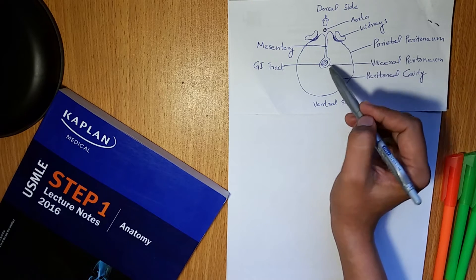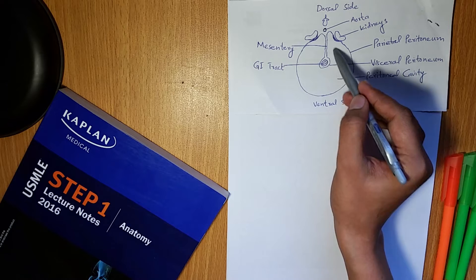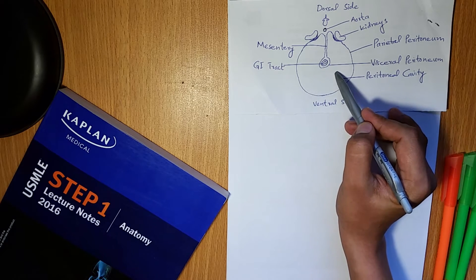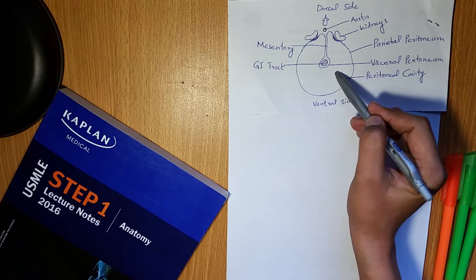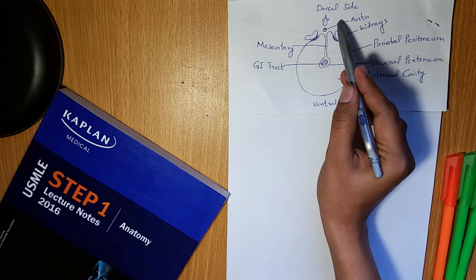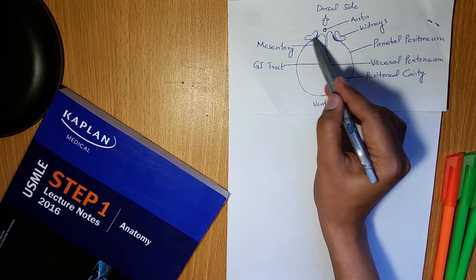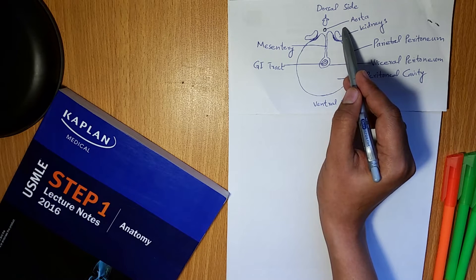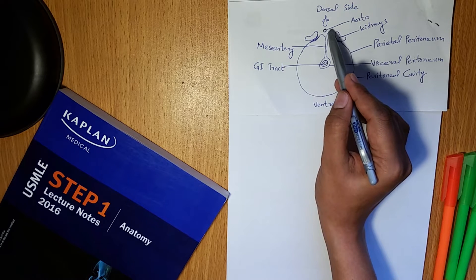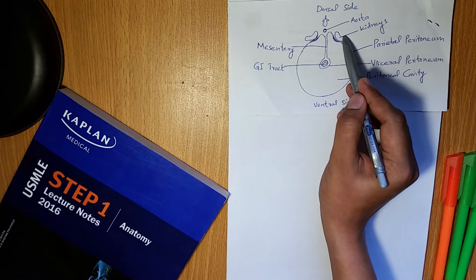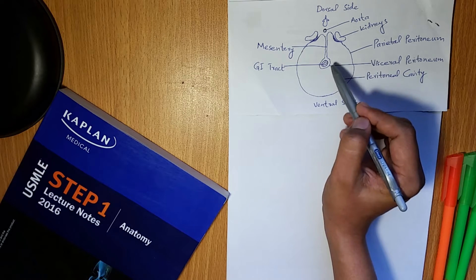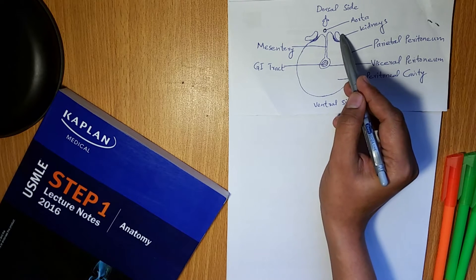The organs which are within the peritoneum are intraperitoneal organs, and those which are outside the peritoneum are retroperitoneal organs, like the aorta and kidneys. These are retroperitoneal organs because they are outside the peritoneum.